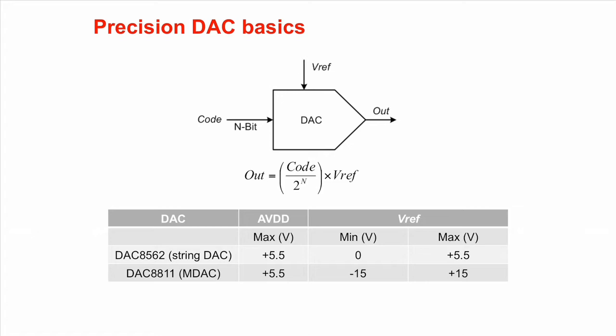The second differentiating feature of an MDAC is the output pin. While most DACs provide a voltage output which is either buffered or unbuffered, the MDAC provides a current output. So, you need an external op amp to convert this current into a voltage output.